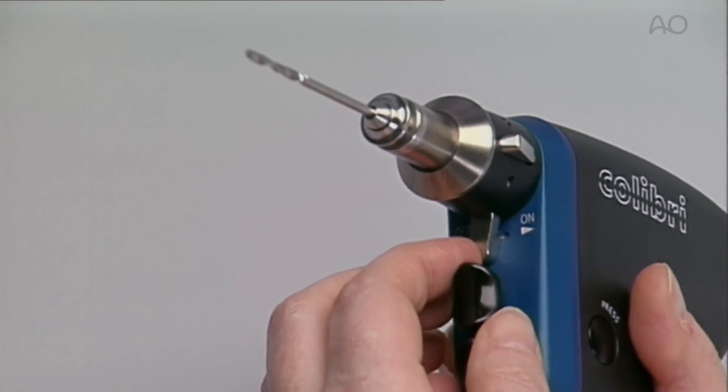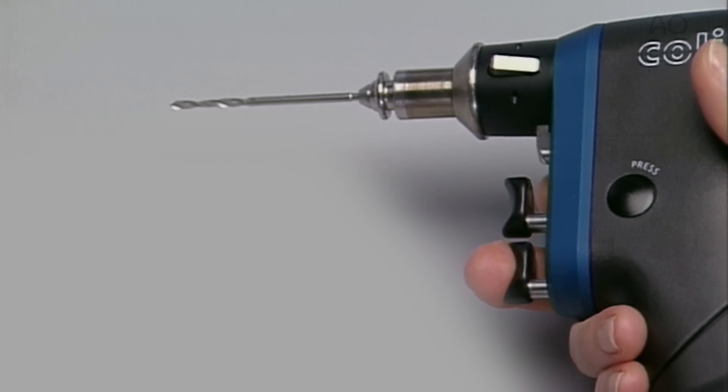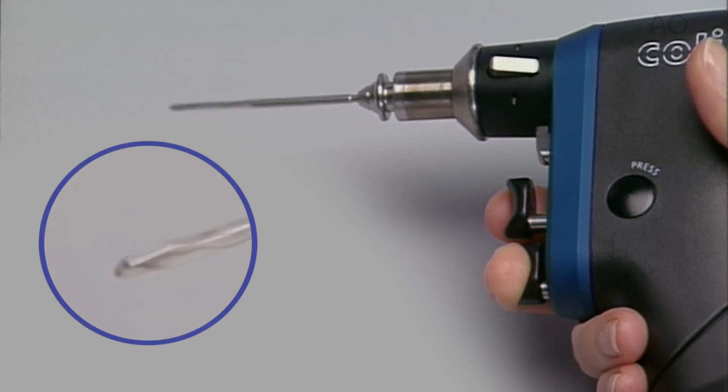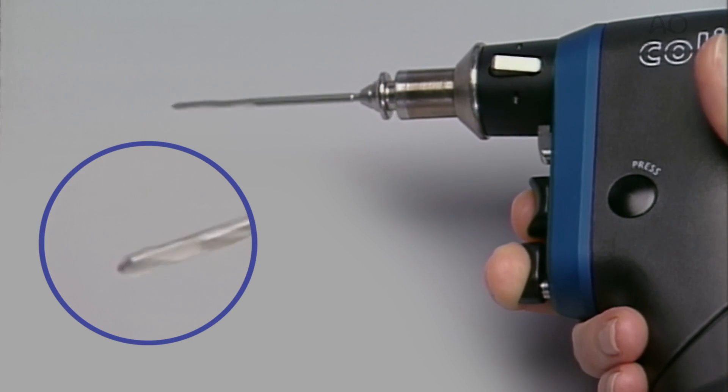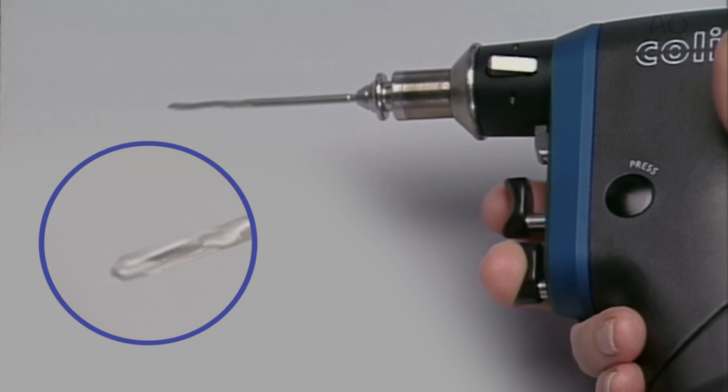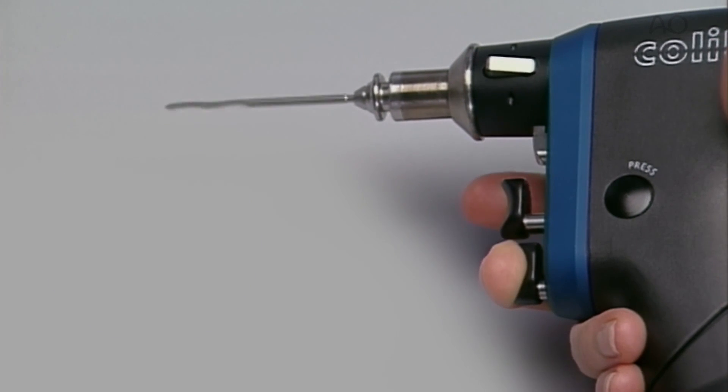The machine is unlocked. By depressing the lower trigger, the drill functions in the forward mode. By depressing both triggers at the same time, the reverse mode is engaged. The speed of the machine can be regulated by the amount of pressure on the trigger and it stops instantly when released.